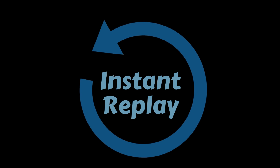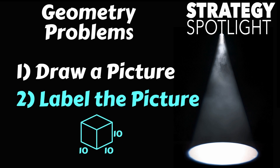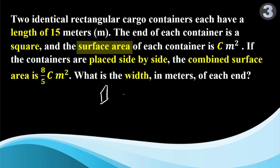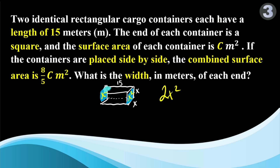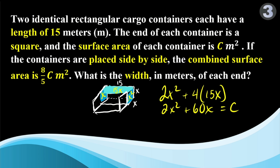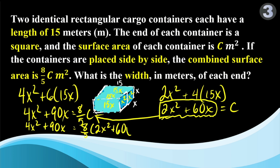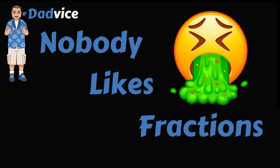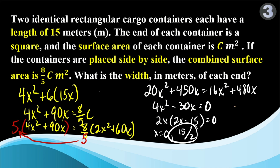Let's take a quick look back at the key moments in that last problem. We started by spotting the most important word — which was width — telling us it was a geometry problem, so we drew a picture, labeled the picture, and wrote an equation. Remembering that surface area is the amount of paint it takes to cover a surface, we figured out the area of each individual side and added them together. Then we smashed the two crates together and found the combined surface area equal to 8 fifths c. We set the two equations equal, got rid of the fractions, and since it was an x squared problem, we brought everything to one side, factored, and solved.